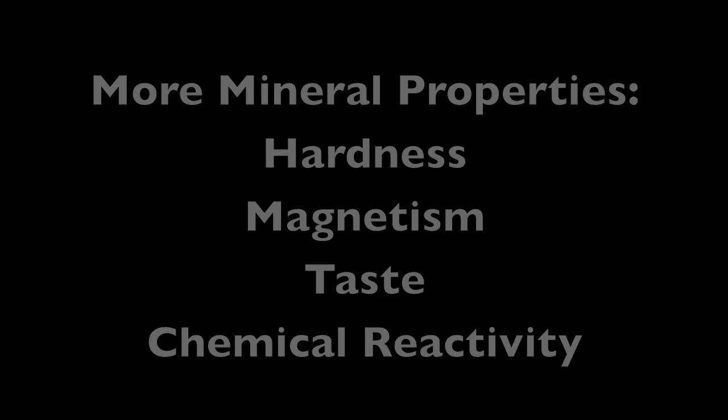Here's an iron mineral called hematite. It's nice and shiny silvery in nature, but if we rub it on the streak plate, we get a reddish-brown streak, kind of the color of dried blood.